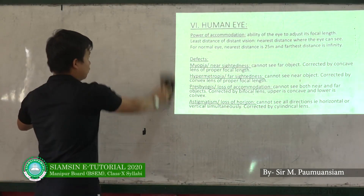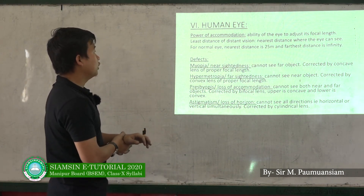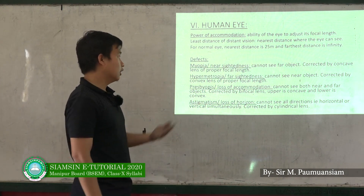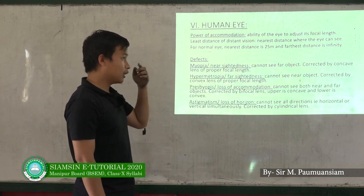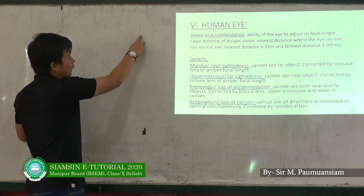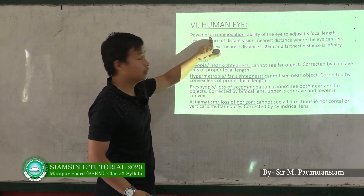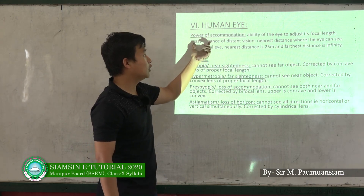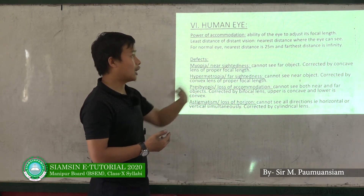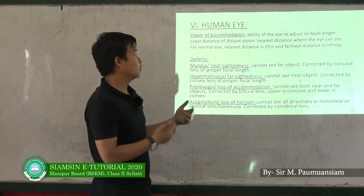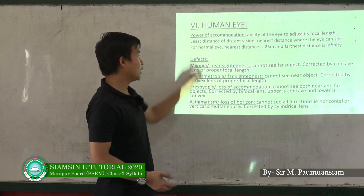The human eye is a source of knowledge. The human eye has a power of accommodation — the ability of the eye to adjust its focal length. For example, when reading a newspaper up close or looking at distant objects, the eye adjusts accordingly using this power of accommodation.